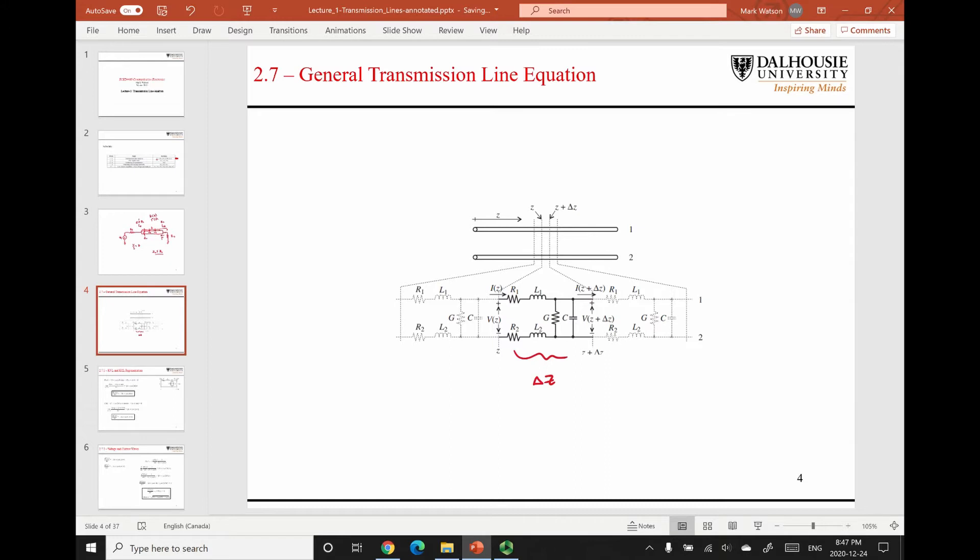So at high frequencies, the parasitic effects become quite apparent in RF systems. Resistors don't act like resistors. They have parasitic capacitance and inductance, things like that. So the same is true for transmission lines themselves. They have parasitic resistance, parasitic inductance, capacitance, and conductance.